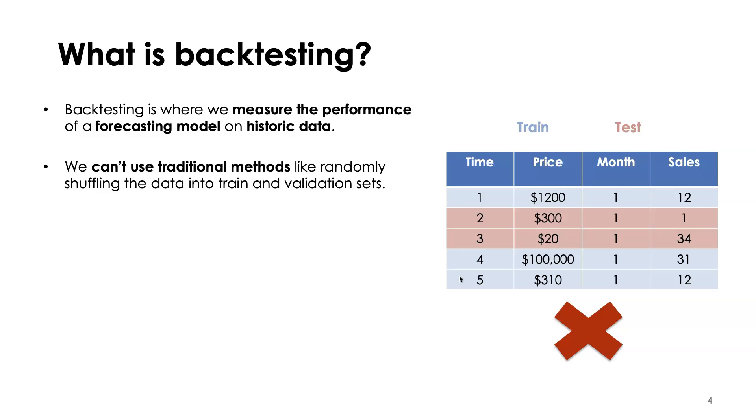What can happen is that values of our time series in the future can end up in the training set and values in the past can end up in the test set. So then you're using values in the future to predict the past and this is a form of data leakage.